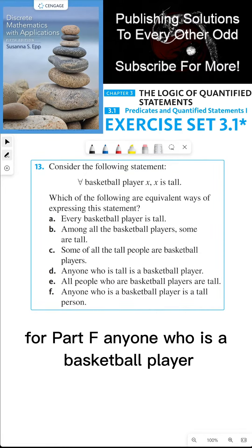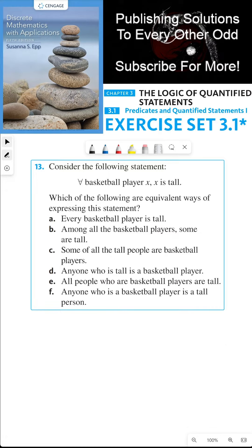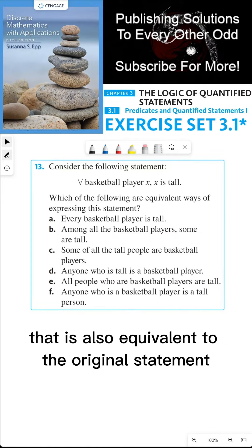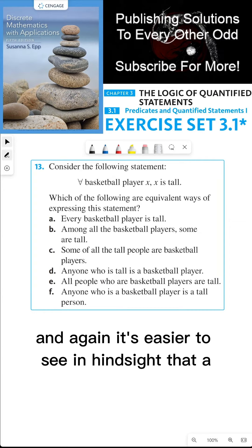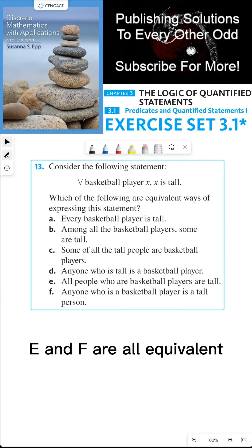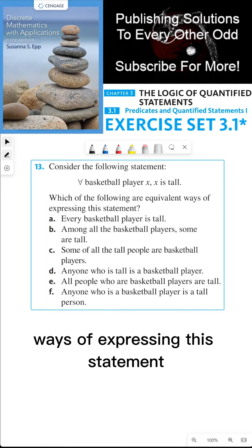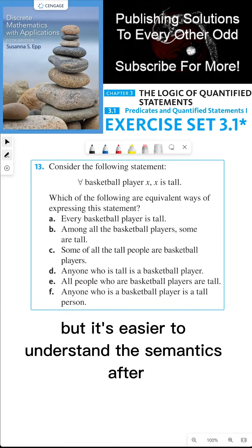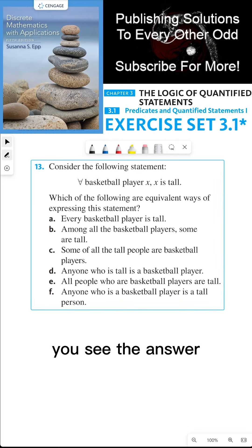For part f, anyone who is a basketball player is a tall person. That is also equivalent to the original statement. And again, it's easier to see in hindsight that a, e, and f are all equivalent ways of expressing the statement. Again, more of a semantical question, but it's easier to understand the semantics after you see the answer.